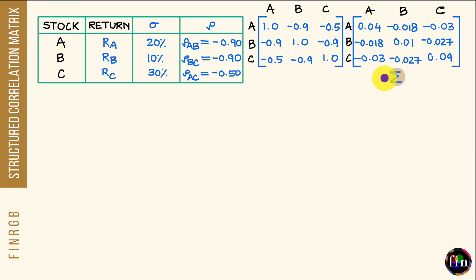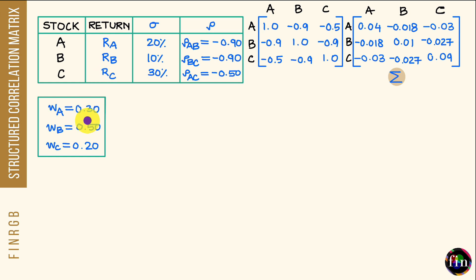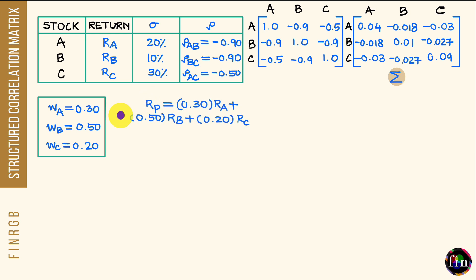Let's create a portfolio using these three stocks in the following weights: 30% allocated to stock A, 50% to stock B, and 20% to stock C. I can then write the return of this portfolio, denoted by RP, as a linear combination of the random returns RA, RB, and RC using these weights.